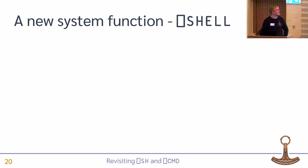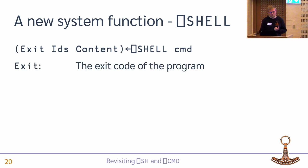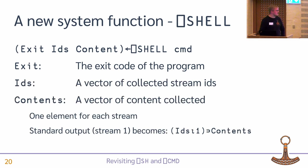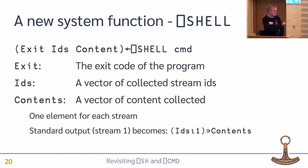Now we get to the design of the new system function — currently called Quad-Shell, though that might change. It returns a three-element nested array where the first element is the exit code of the program as an integer, and then the IDs and contents are the set of streams from which we collect data. If you want to pick out the contents from standard output, you use the IDs to figure out the index into the contents array.